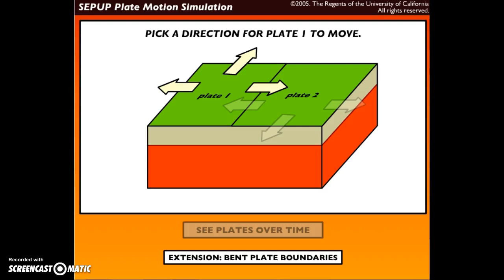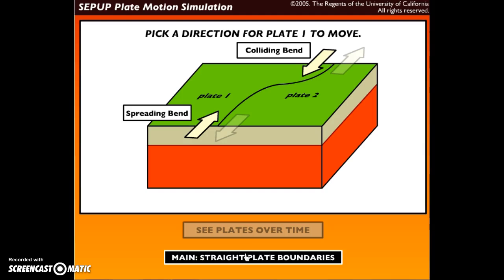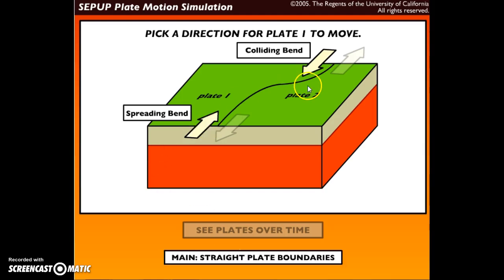Instead of looking at straight boundaries, we're going to look at bent plate boundaries this time because not every plate boundary is a straight line. The first one we're going to look at is the transform fault boundary.